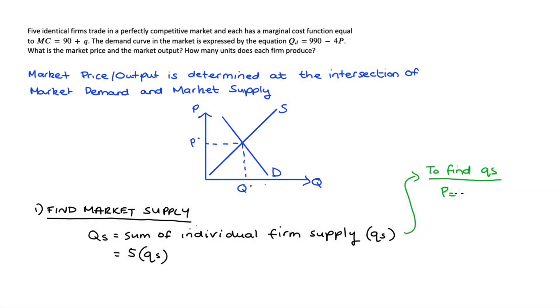Now in order to proceed we just need to recall that in perfect competition the firm is going to set their quantity such that price is equal to the marginal cost of production. Now we know from the question that marginal cost is equal to 90 + q so we can substitute this expression into that condition and we get P = 90 + qs.